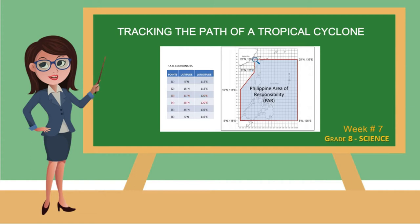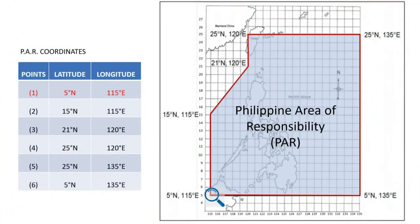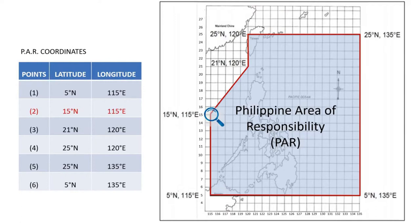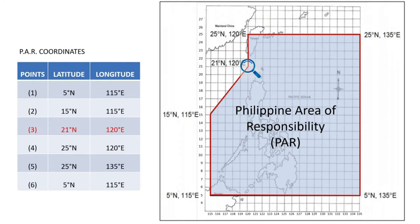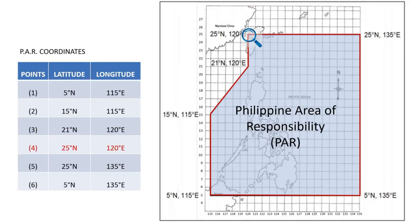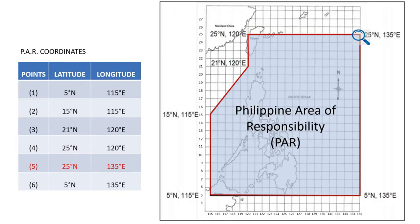Given the coordinates or the latitude and longitude of a tropical cyclone, PAGASA can tell if the typhoon has entered the Philippine Area of Responsibility. The Philippine Area of Responsibility is a designated area where PAGASA is tasked to monitor the occurrence of tropical cyclones. The Philippine Area of Responsibility is bounded by the following coordinates: 5 degrees north and 115 degrees east, 15 degrees north and 115 degrees east, 21 degrees north and 120 degrees east, 25 degrees north and 120 degrees east, 25 degrees north and 135 degrees east, 5 degrees north and 135 degrees east.